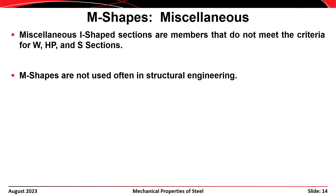Miscellaneous I-shape sections are also used. These are basically I-shape sections that don't meet the criteria for W, HP, or S sections. Miscellaneous sections are not used often in structural engineering—they might be used for non-structural applications like stairwells or things of that nature.